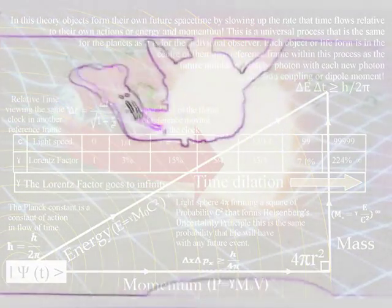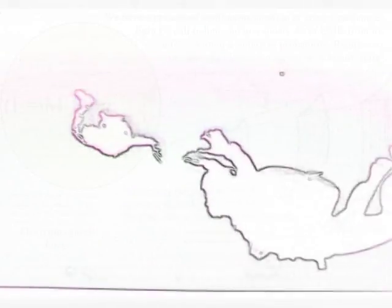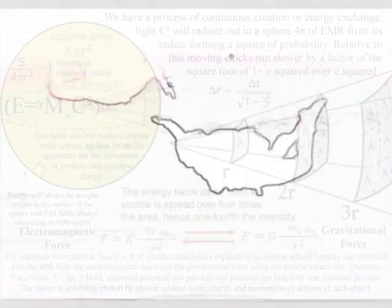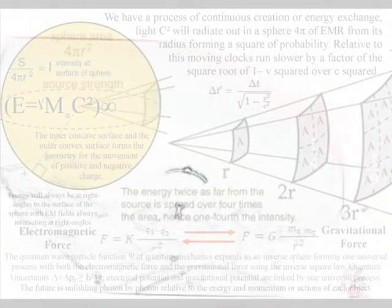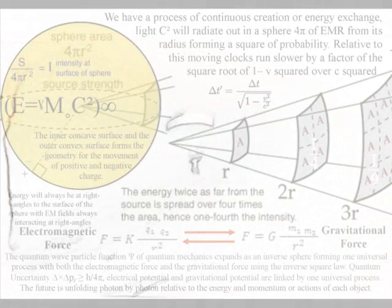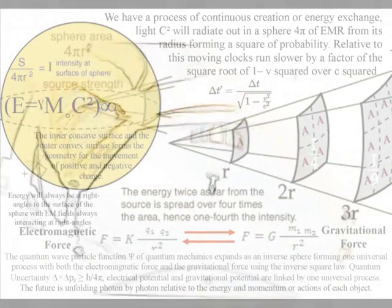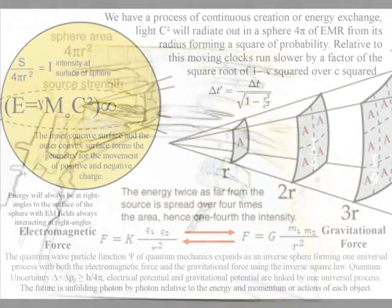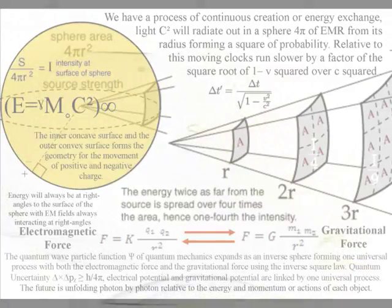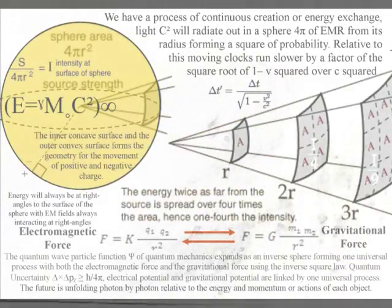The gravitational force is a secondary force to the electromagnetic force. The spontaneous absorption and emission of light, represented by the probability function or quantum wave-particle function, radiates out as an inverse sphere, with both the electromagnetic force and the gravitational force sharing the inverse square law.